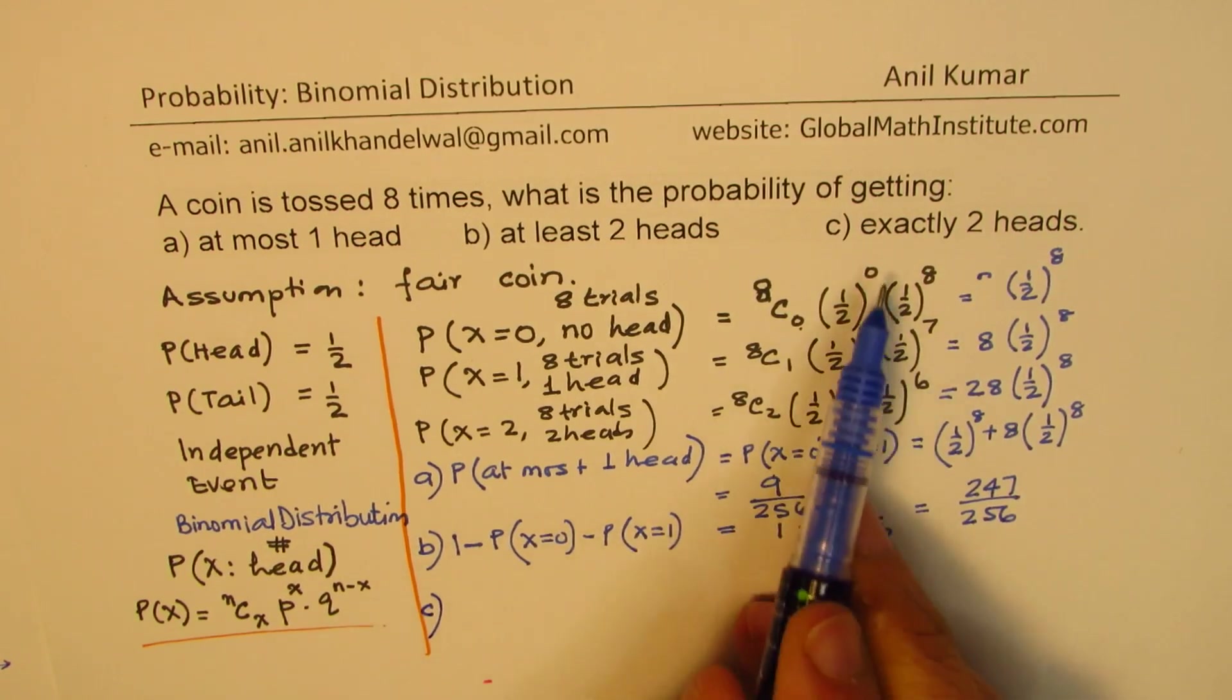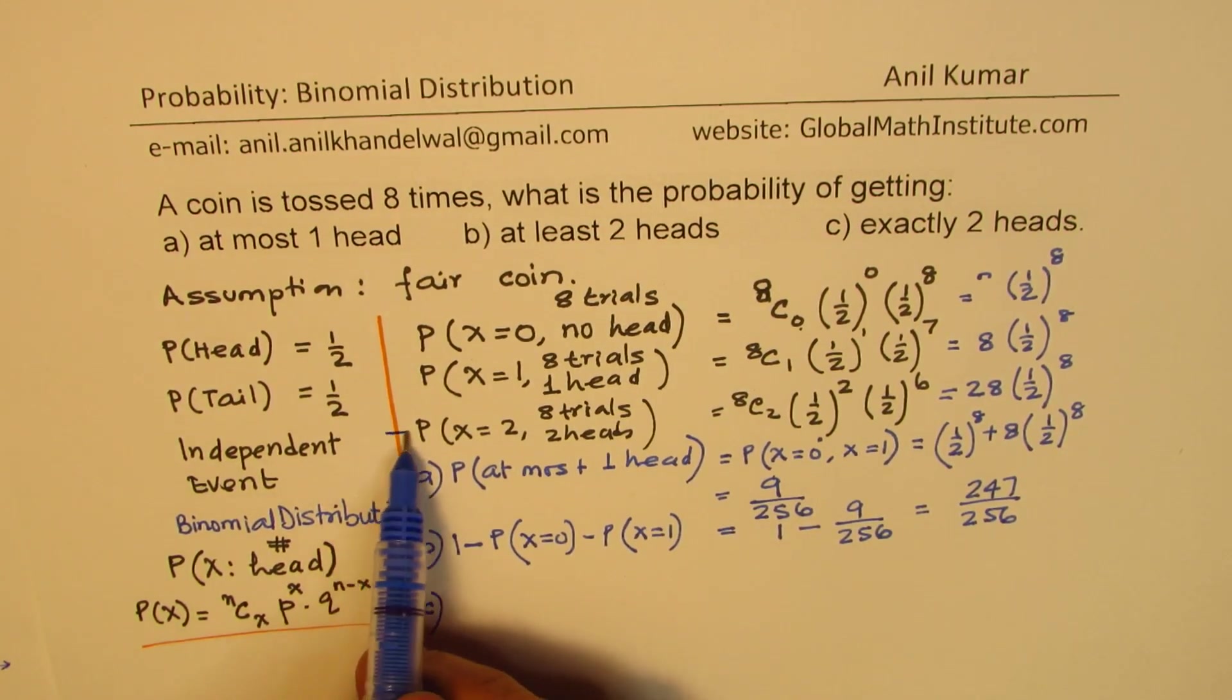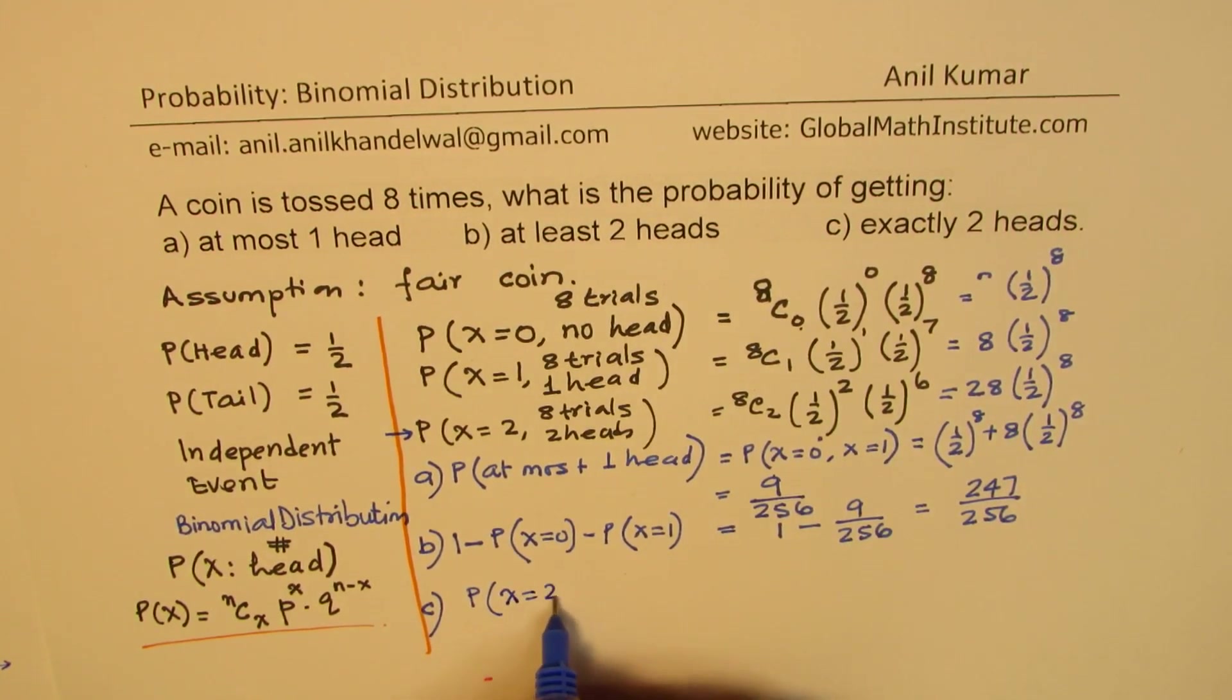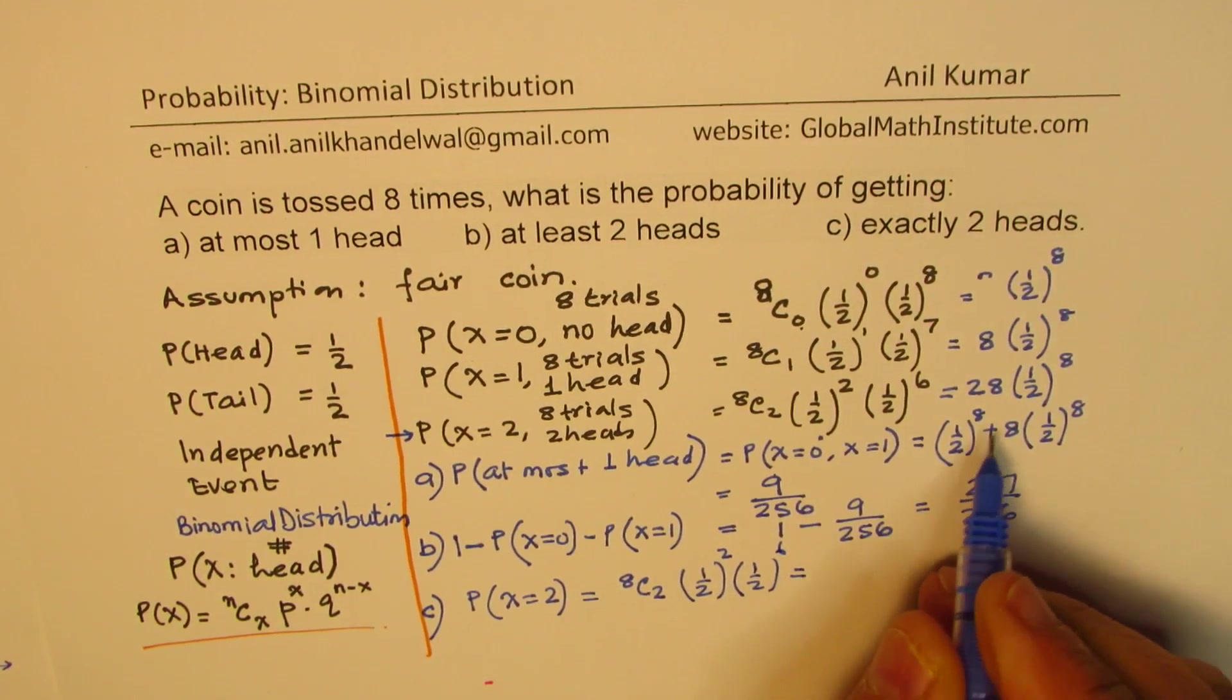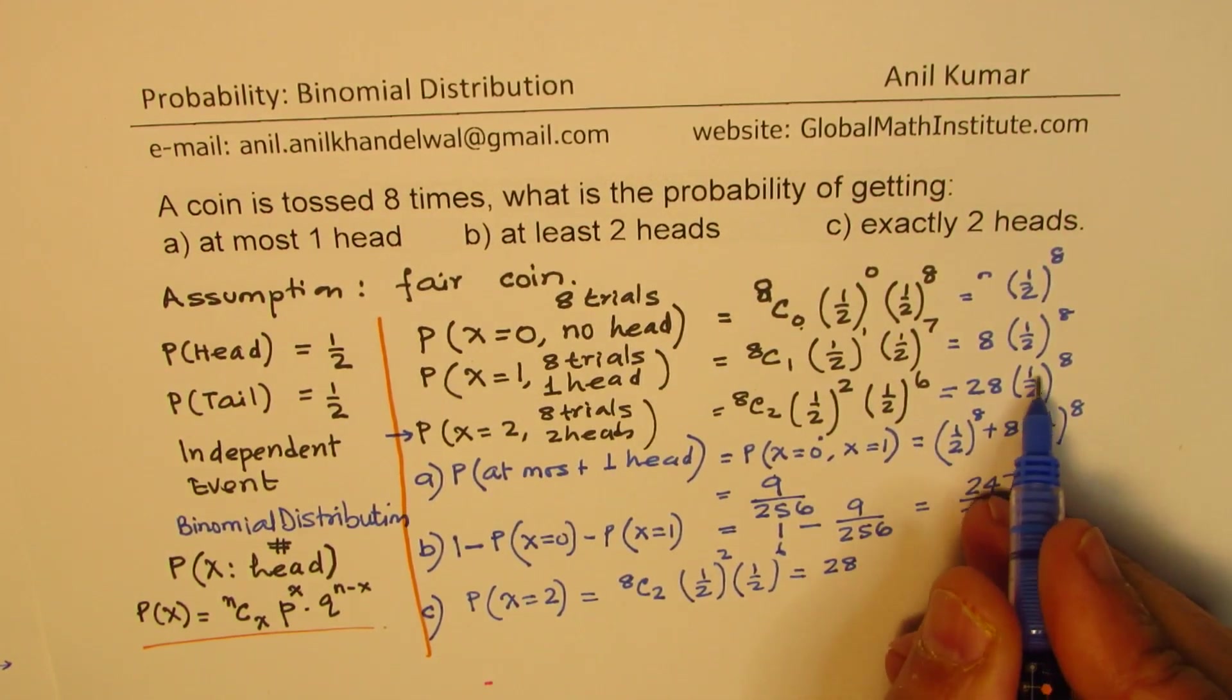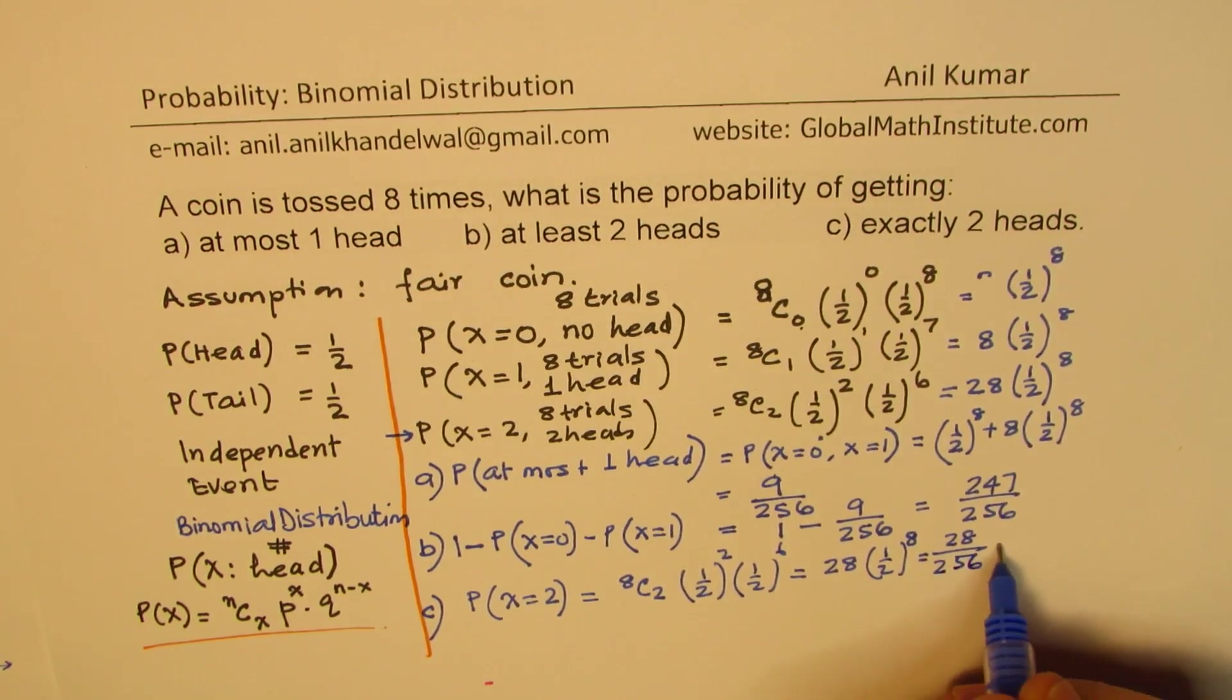Now part C is exactly two heads. So when we are looking for probability of exactly two heads, means that option. So probability for the value of heads being two is 8C2, half to the power of 2 and half to the power of 6. So which is 28 times 1 over 2 to the power of 8, which is 28 over 256.